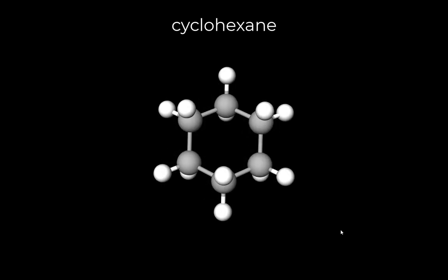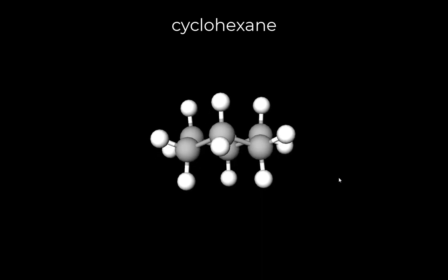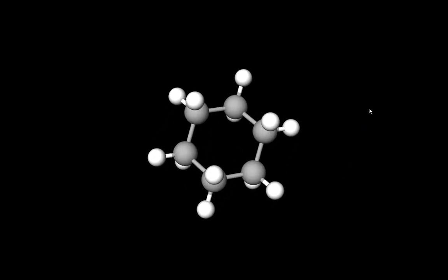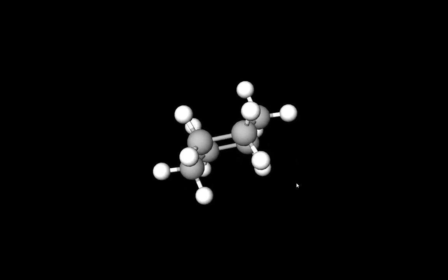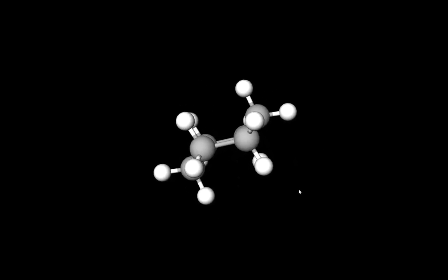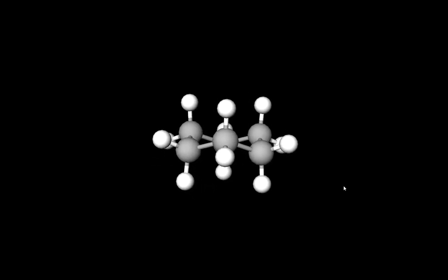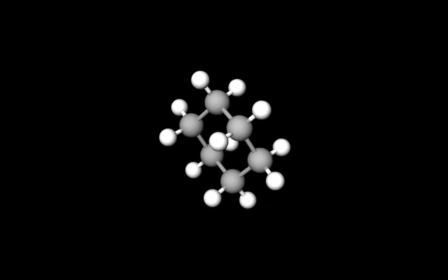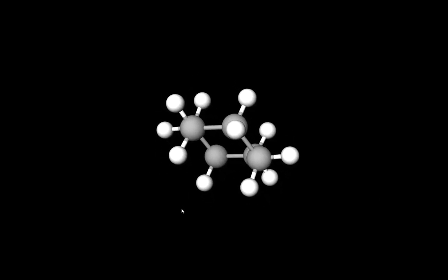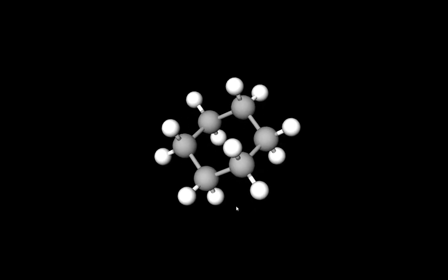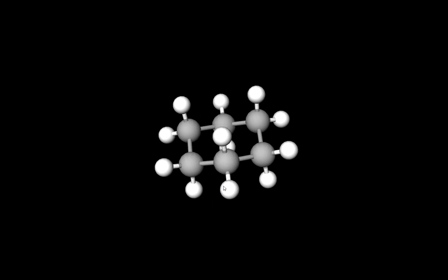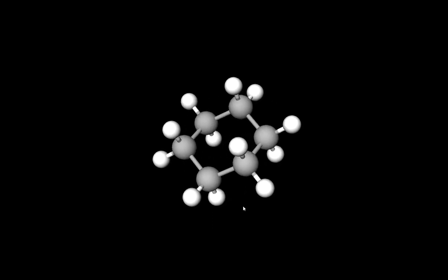Here is cyclohexane. This is not the same thing as benzene — you'll notice it has twice as many hydrogens as benzene. Although it might look flat at first, if we look at it from the side, you'll clearly see that this is not a flat molecule. We call this a chair shape in organic chemistry. You will see clearly that those carbon atoms do not all lie in a plane — it is not flat. All of the angles in this molecule are approximately 109.5 degrees and all of those atoms are tetrahedral shaped.